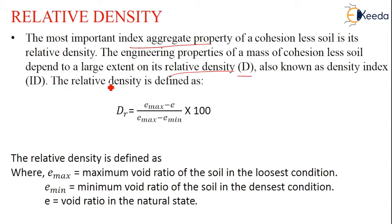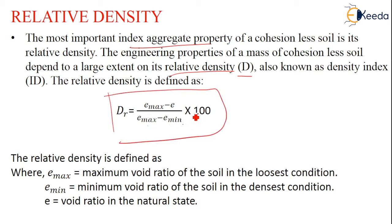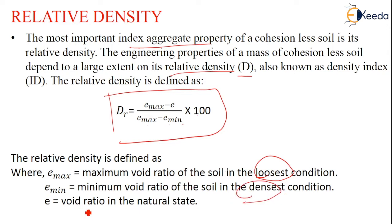Mathematically it is expressed as: Dr = (Emax − E) / (Emax − Emin) × 100. Emax is the maximum void ratio of the soil in the loosest condition. Emin is the minimum void ratio of the soil in the densest condition. And E is the void ratio in the natural state.